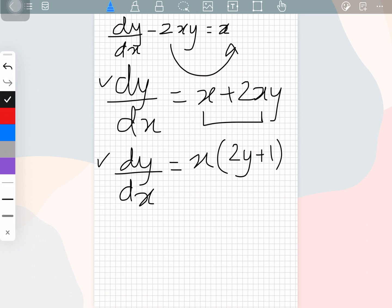Now after this what we can do is we can send dx to this side and then the term containing y to this side. So after that what we will get is dy over 2y plus 1 is equal to x dx.